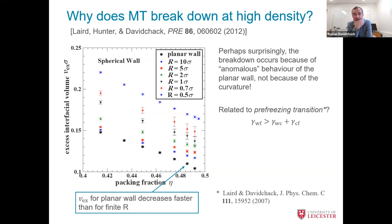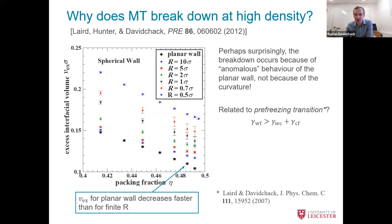We believe the deviation at high density is because pre-freezing may be happening. Pre-freezing occurs when the energy cost for a fluid to rearrange next to a wall is bigger than the cost of rearranging against a crystal interface — so a crystal layer forms between the fluid and wall even below the bulk freezing density. You get lower energy by creating two interfaces (fluid-solid and solid-wall) rather than a single fluid-wall interface.